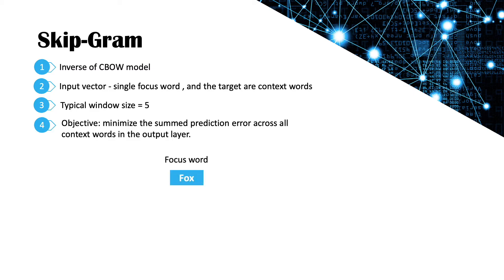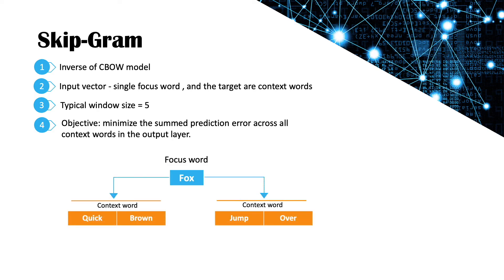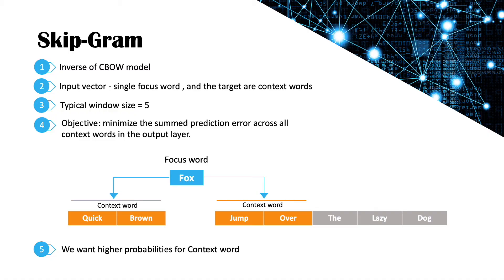In the Skip-gram algorithm, we have a single focus word and we're trying to predict the context or surrounding words. With a window size of 2, we take two words on each side — quick and brown on one side, and jump and over on the other side of fox. We want to maximize the probability of the surrounding words, meaning once we input the focus word fox, we want to get the maximum probability of context words quick, brown, jump, and over among all words in the output layer.